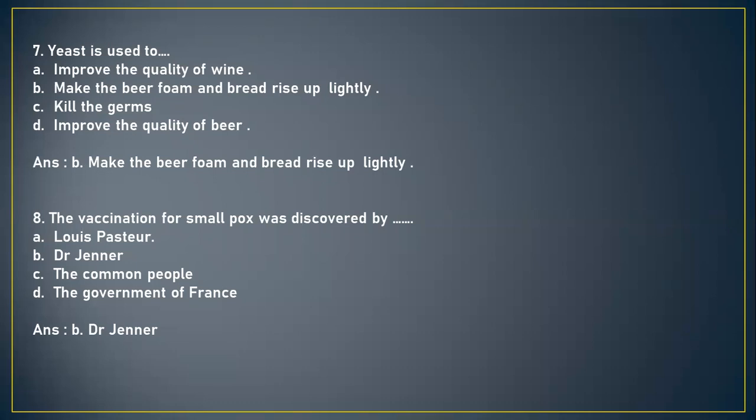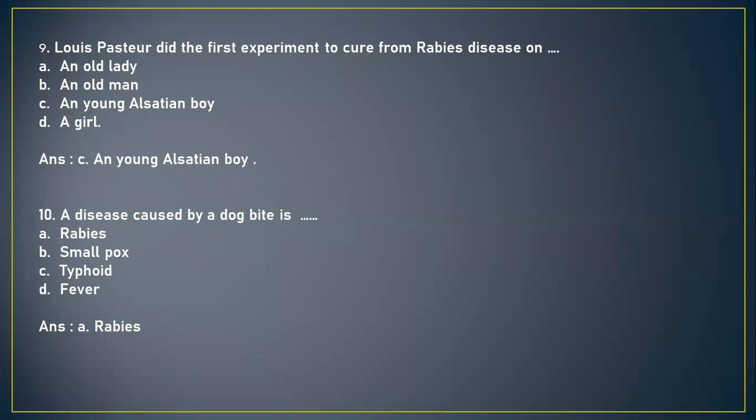Next question: The vaccination for smallpox was discovered by — A) Louis Pasteur, B) Dr. Jenner, C) the common people, or D) the government of France. The correct answer is option B, Dr. Jenner. Next question: Louis Pasteur did the first experiment to cure rabies disease on — A) an old lady, B) an old man, C) a young Alsatian boy, or D) a girl. The correct answer is option C, a young Alsatian boy.